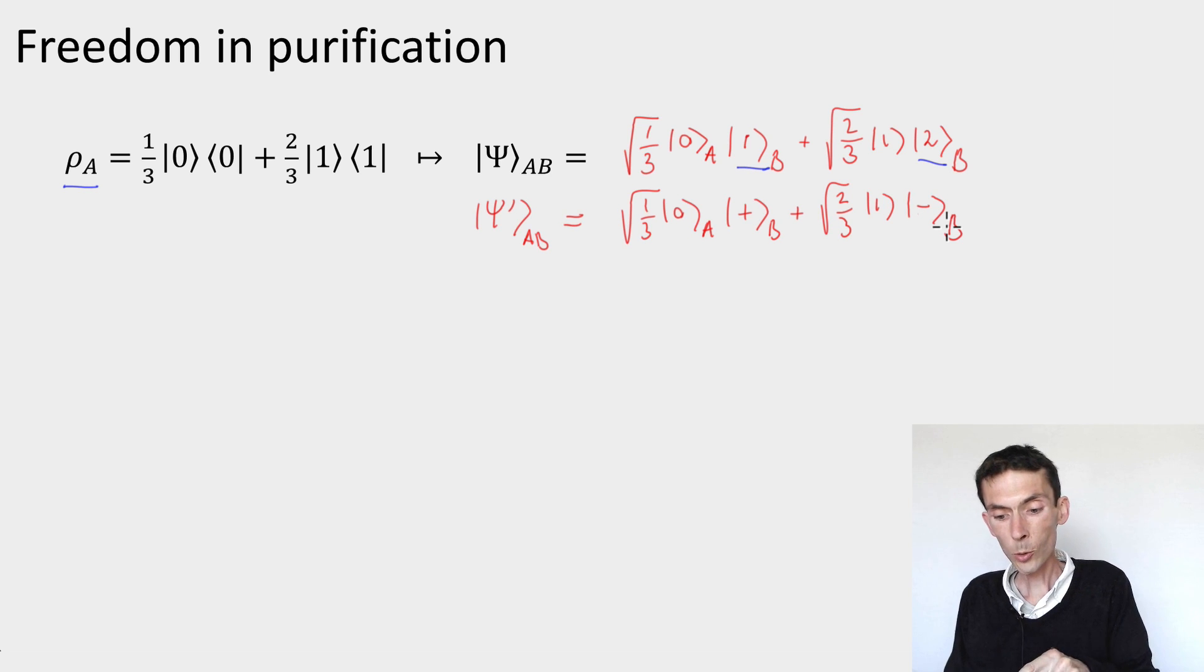And what you can see about them is that the only change I made is that I used a different basis for B. So I can define a unitary which acts only on the B system and would map the |1⟩ state to the |+⟩ state and the |2⟩ state to the |−⟩ state on B.